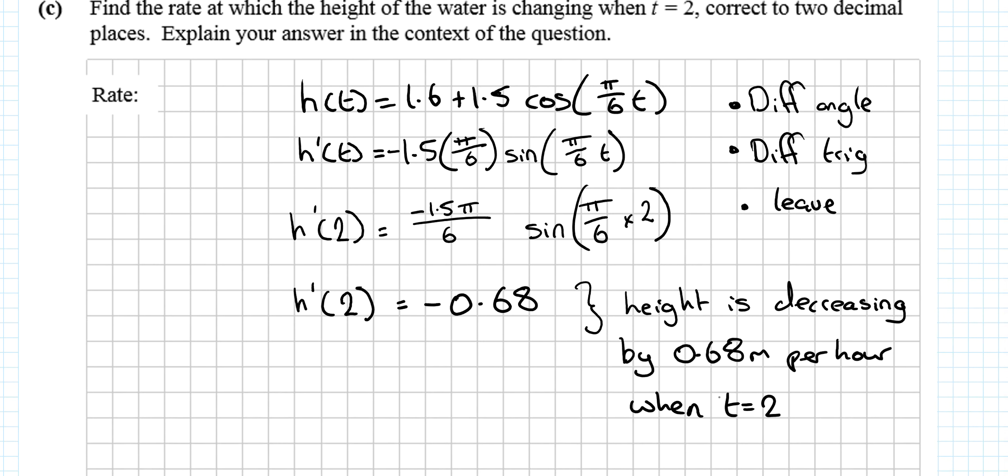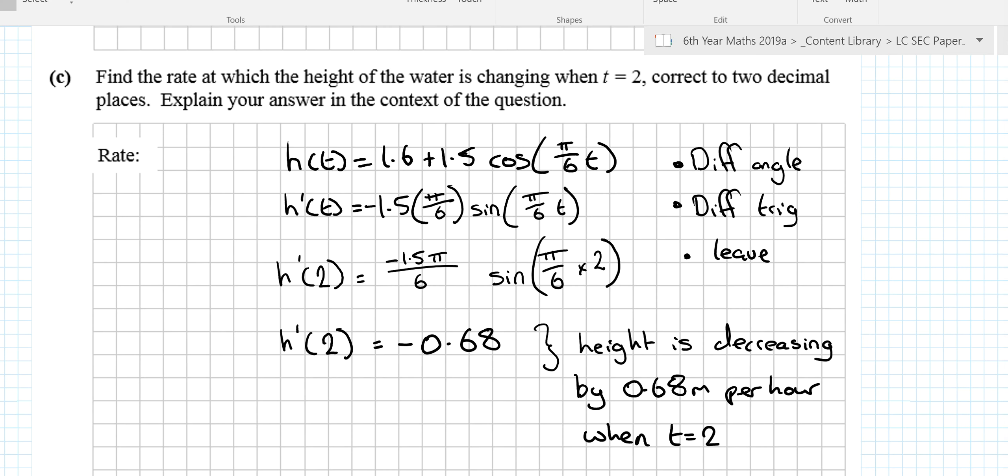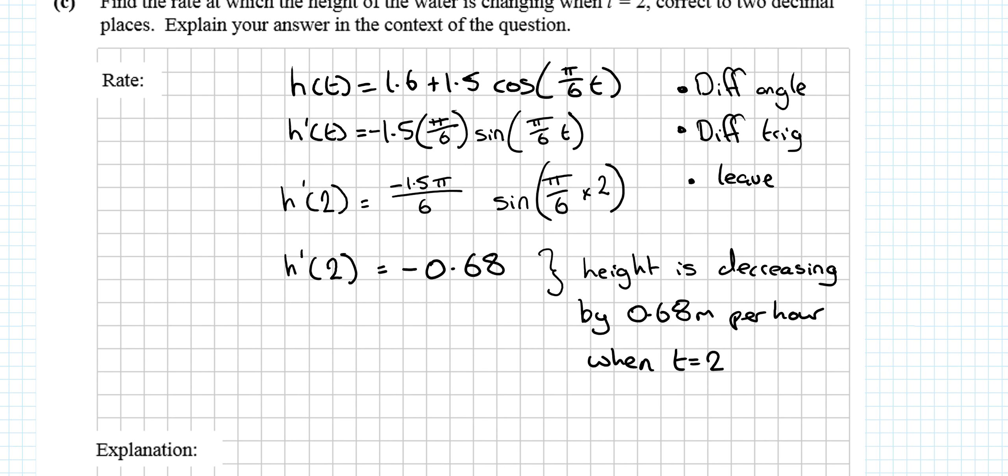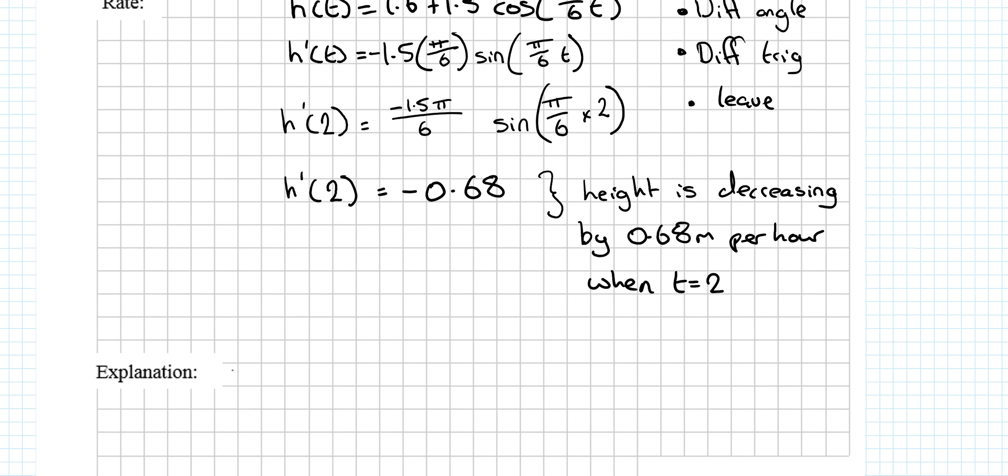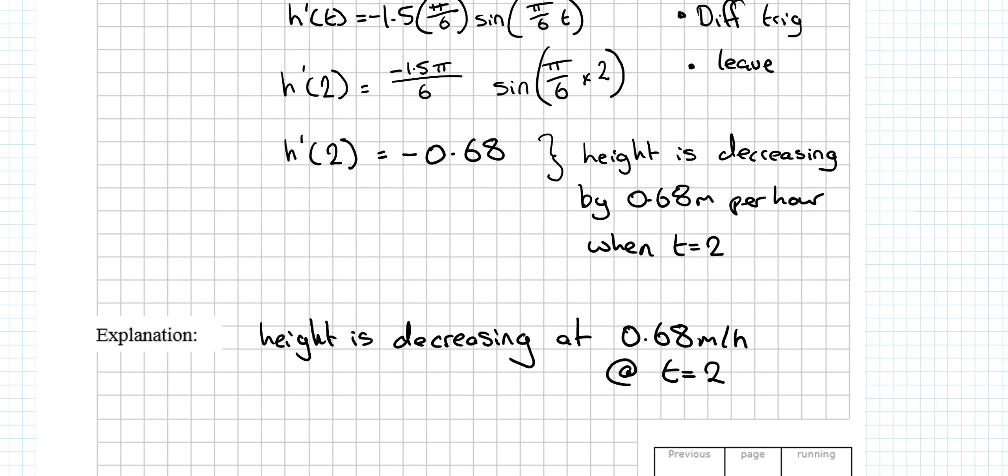What's that in context? The height is decreasing by 0.68 meters per hour when t equals 2. The minus just means it's decreasing. When the question asks us to explain this in context, you'd say: height is decreasing at 0.68 meters per hour at t equals 2.